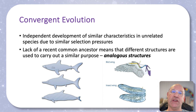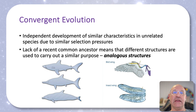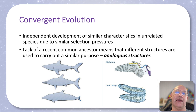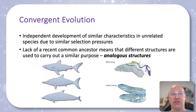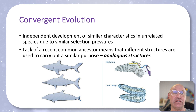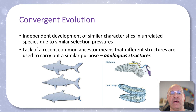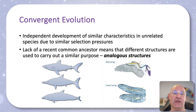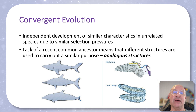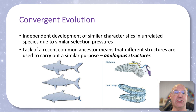Convergent evolution is where species don't share a recent common ancestor but they independently develop characteristics that have a similar function because they have similar selective pressures. A classic example is analogous structures like the bird wing and the insect wing. They both allow flight but come about in entirely different ways — different structures, same function.